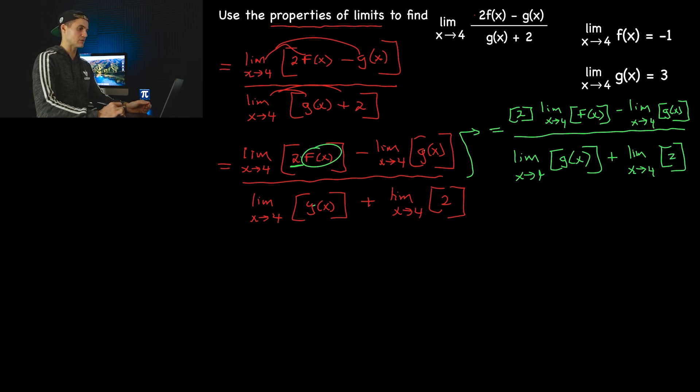And now finally we can go into plugging everything in. The limit as x approaches 4 of f(x) is negative 1, and then the limit as x approaches 4 of g(x) is 3. So what are we going to have?